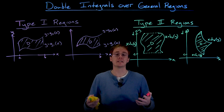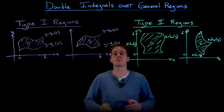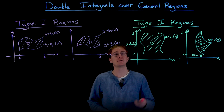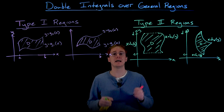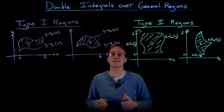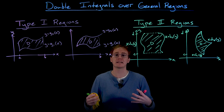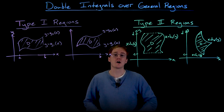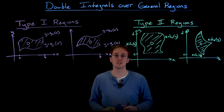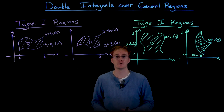Sometimes a region can be described as either type 1 or type 2, and we can solve the problem either way. What can also happen is that a type 2 region can be expressed as a type 1 region, but we'd have to break it up into multiple type 1 regions. Now that we've seen pictures of both types, let's write down their formal definitions.